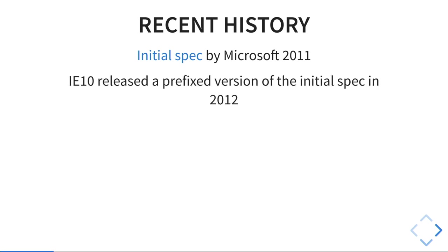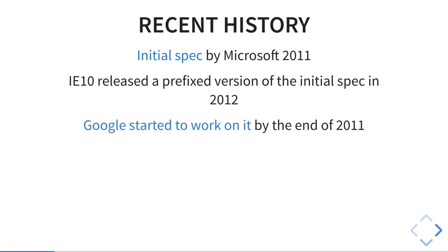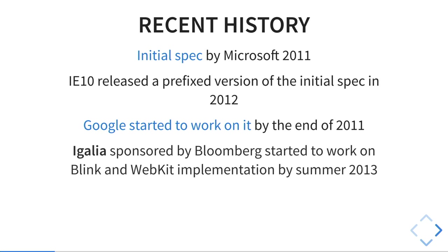I'm not going to review the full history — like when CSS started, they were already thinking about something like grid. But just the recent things that happened during this decade: the initial spec by Microsoft started to work at the beginning of the decade. The initial spec that was published was in 2011, and then Internet Explorer released the first prefixed versions of this initial spec the year later. Google started to work on it in WebKit — it was before the fork, so it was still the same engine as Safari. But by the end of 2011 they stopped; they were not working a lot on it and were losing some traction.